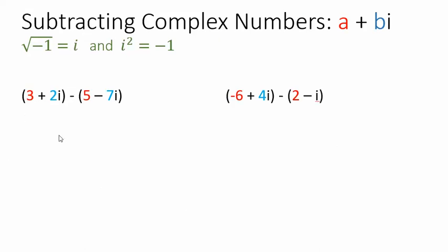Let's look at subtraction. Subtracting complex numbers is going to be pretty much the same as adding. The only difference is now we have a minus in front of the parentheses. So we do need to distribute this negative into both parts of this complex number — sort of like distributing a negative 1. So we'd have negative 5 and then plus 7i. That's really the only place you need to be careful — make sure you're distributing this negative and getting that positive sign right there.